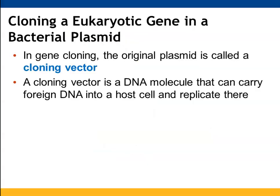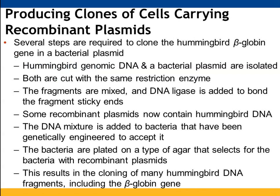When a eukaryotic gene is being cloned, the plasmid serves as your cloning vector — a DNA molecule that takes the foreign DNA and places it into your host cell, where it is then replicated. This is how we produce clones of cells containing recombinant plasmids.